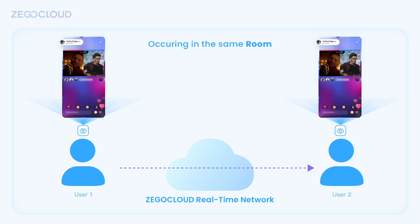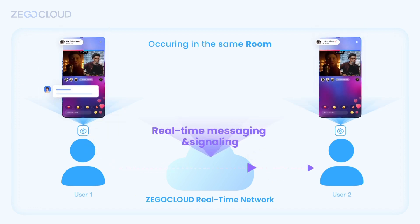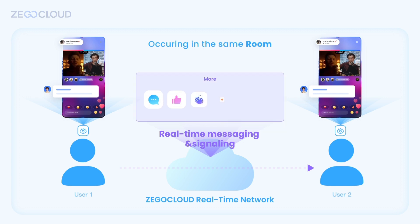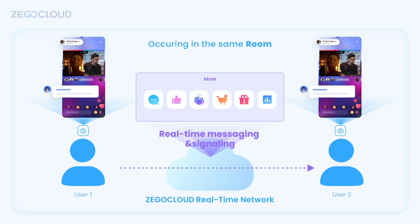In addition to stream transmission, real-time messaging and signaling can achieve text message sending and more interactive functions, such as sending likes and gifts, receiving notifications, product displays, and polling initiation.